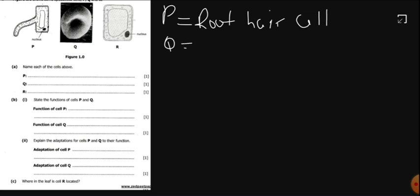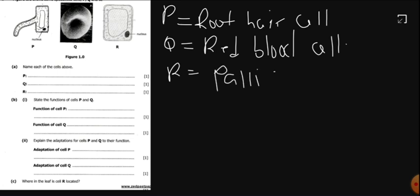Q, since it's a specialized cell, we won't say it's an animal cell, but we'll say it's a red blood cell. R, we'll also not say it's a plant cell, but it's a palisade cell.